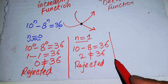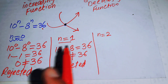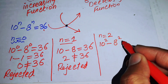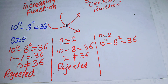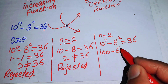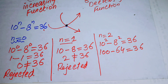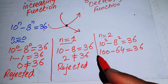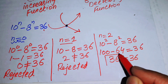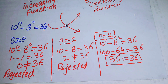Now checking n equals 2: 10 squared minus 8 squared equals 100 minus 64 equals 36. So 36 equals 36, which means n equals 2 satisfies the given equation.